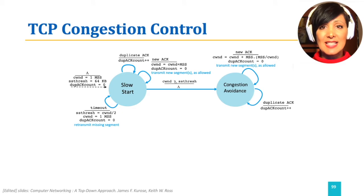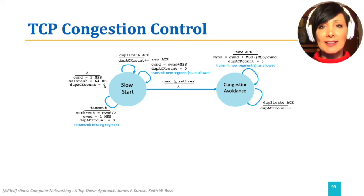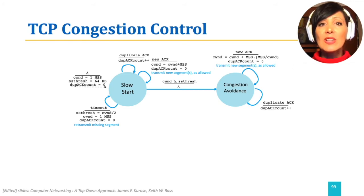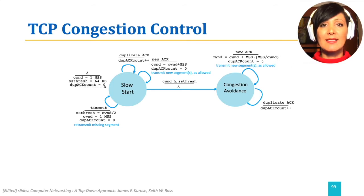In congestion avoidance state, for each new ACK, the window size will increase only mildly. To reach an increase of 1 MSS per RTT, we can divide MSS by window size and only add that portion of MSS for each ACK.